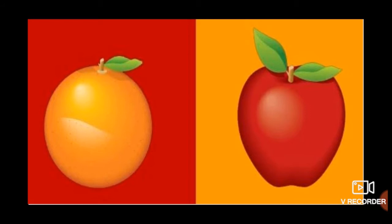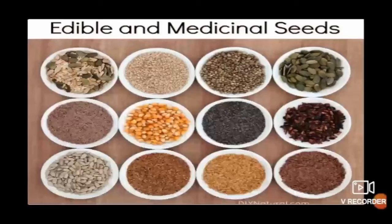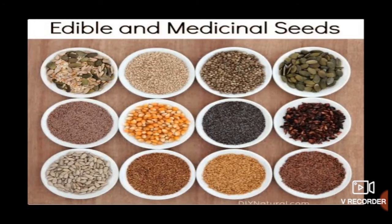Some fruits store food in their pulp. Fruits such as apple, mango, orange and pear are some edible fruits. Do you know kids? Fruits are often used to make different things we enjoy eating and drinking, such as tomato sauce, pineapple jam and orange juice.